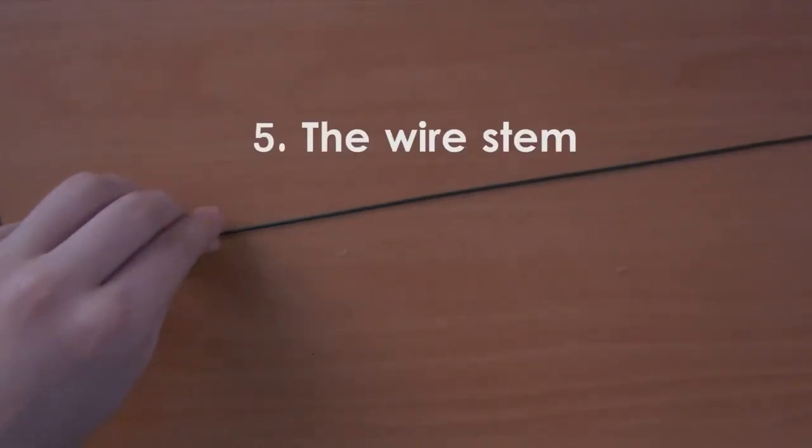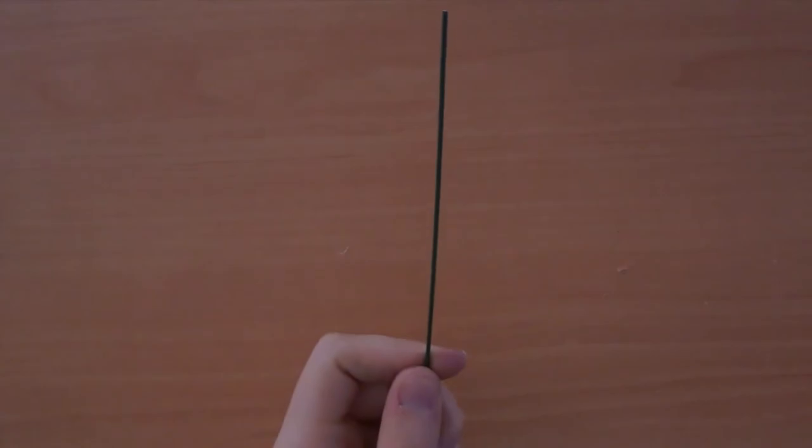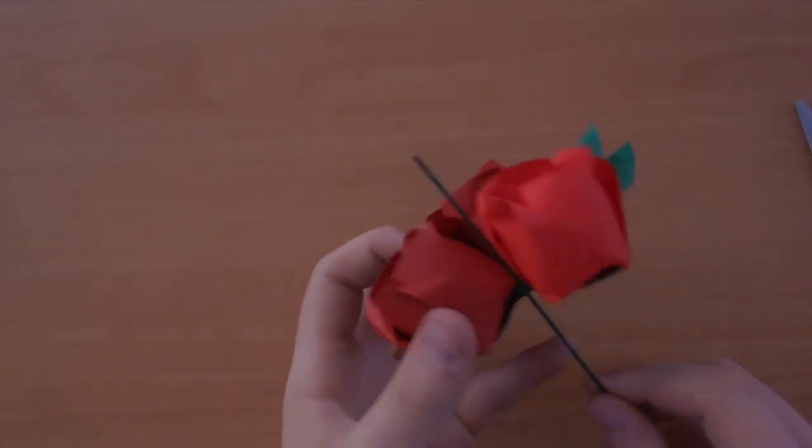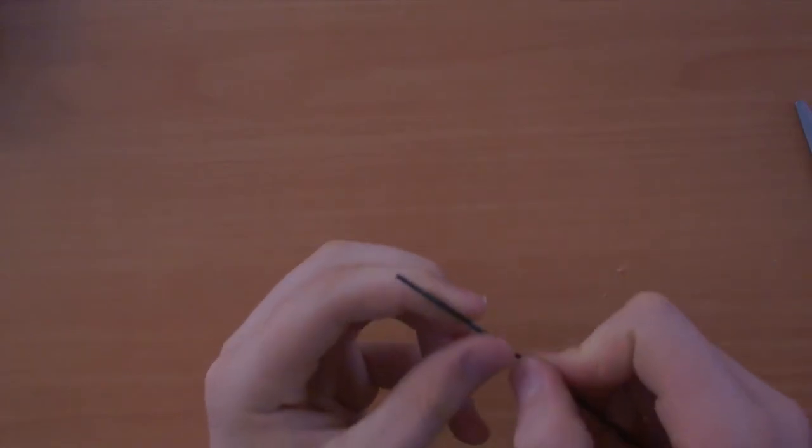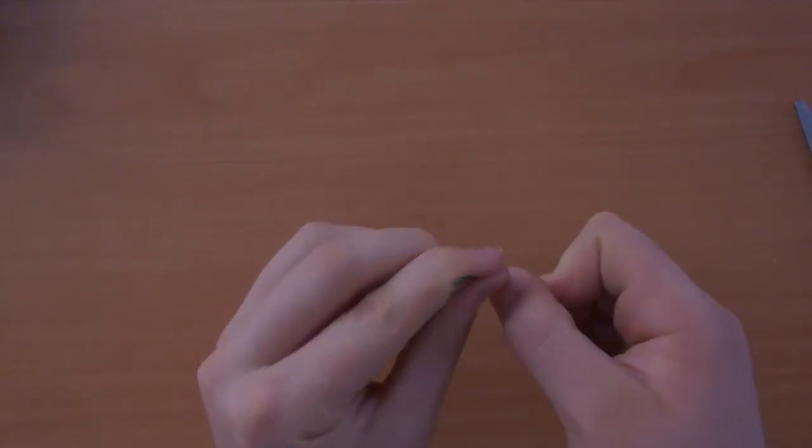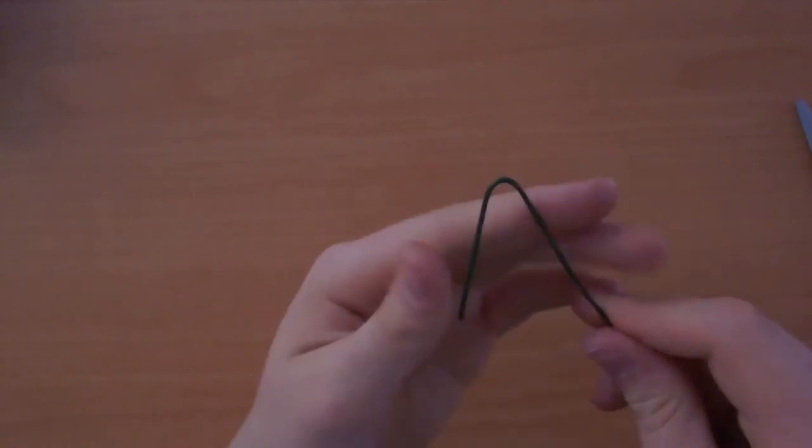You're now going to take your green wire stem and measure it up next to the base of the corsage. These will work as your baby's breath. You're going to size it and bend it over the approximated size that just so sticks over the corsage just enough to look good.